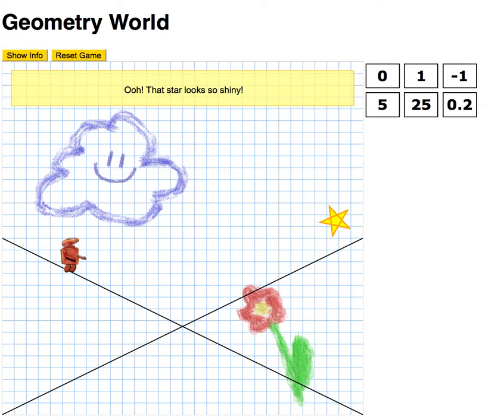He lives in a little graph paper world and he can move around on lines and kind of go wherever he feels like going.